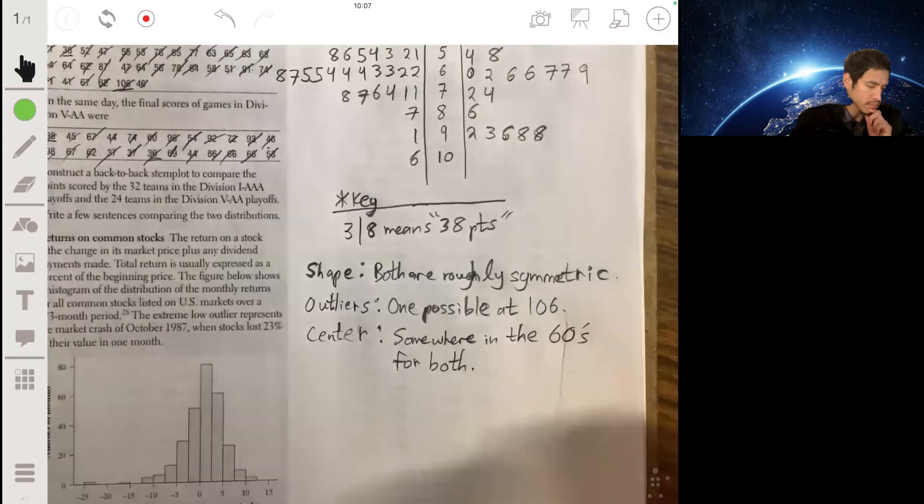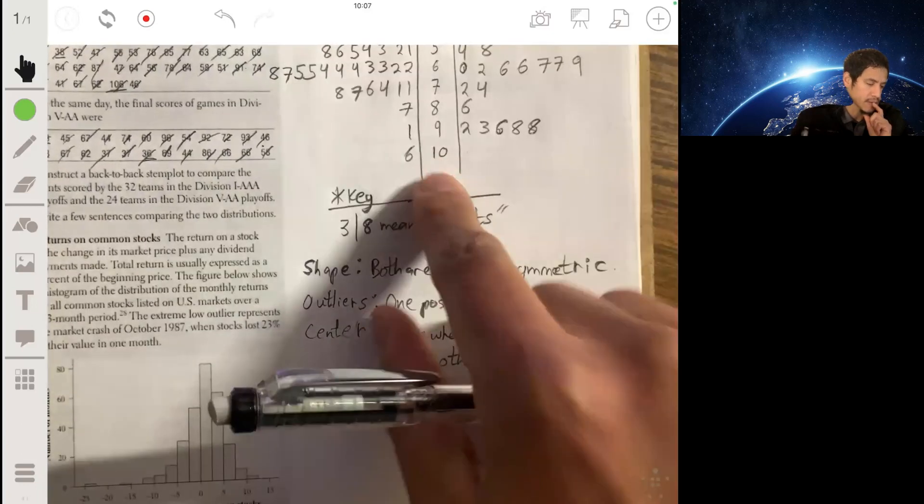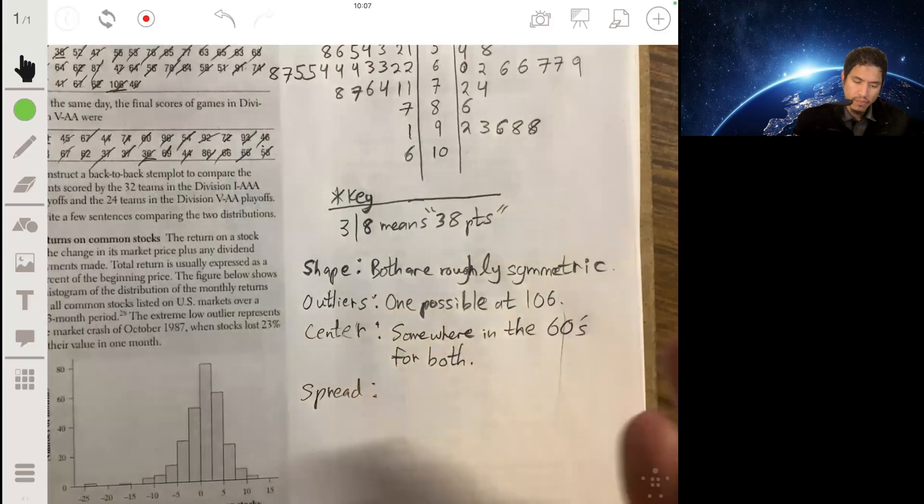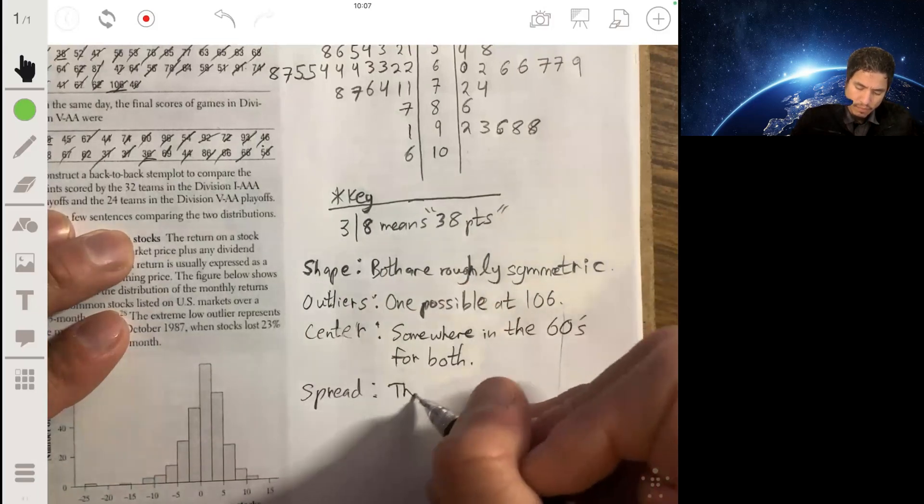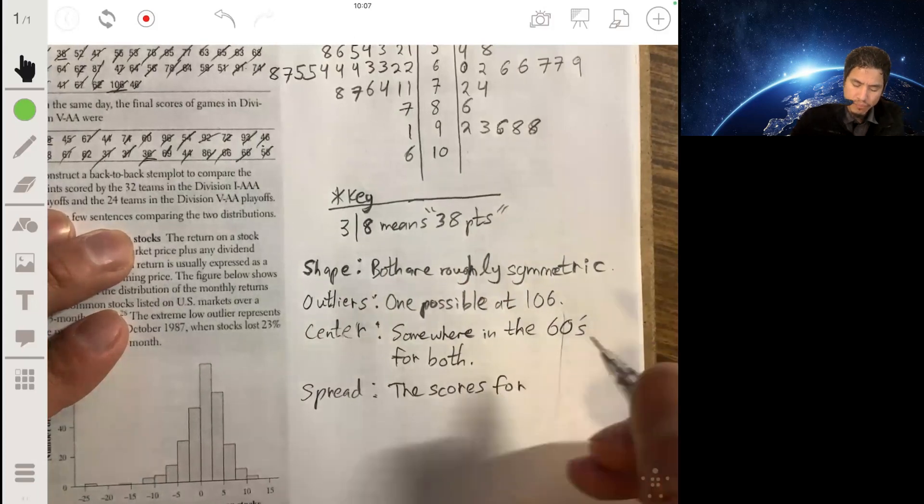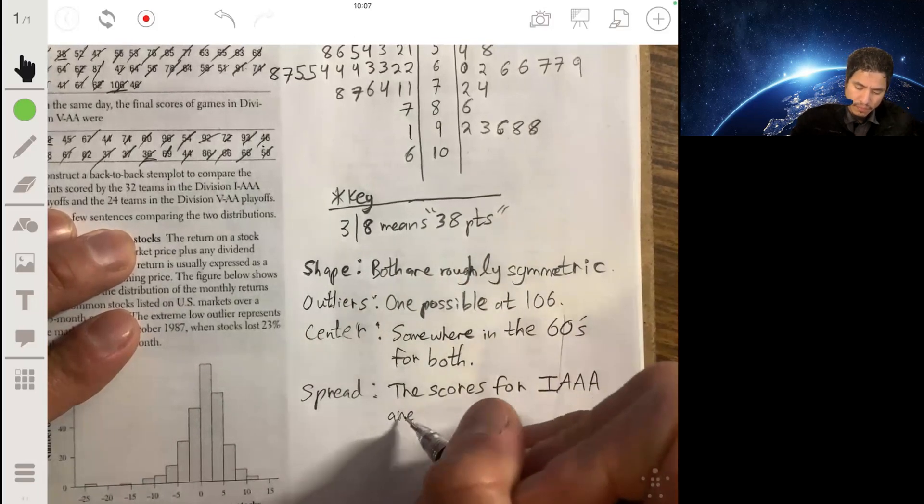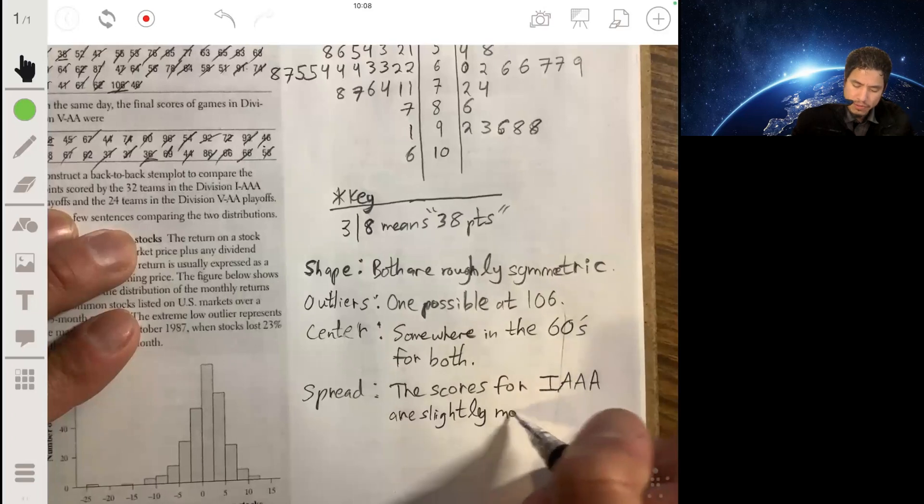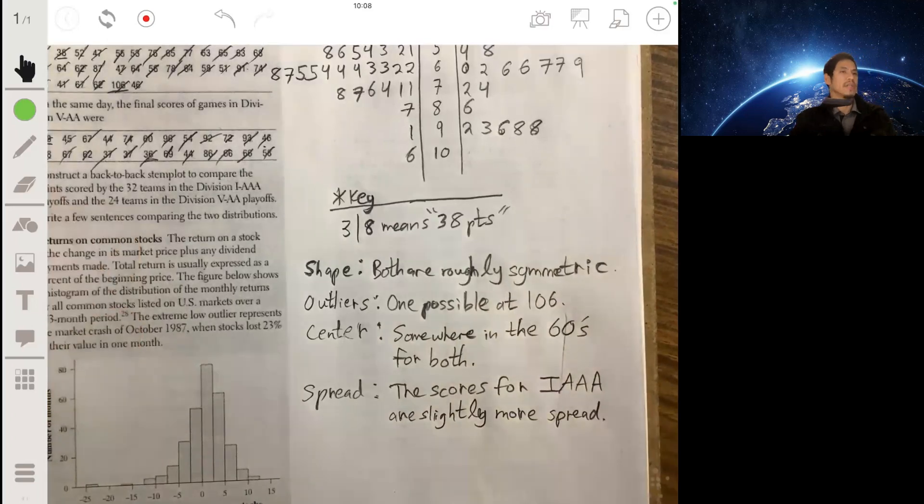And then the spread: the Division 1 Triple A are more spread, they go from 38 to 106, but they're pretty close. So you can see the scores for the Division 1 Triple A are slightly more spread. There's more variability, or you can say the range is larger for that one. That's all for that.